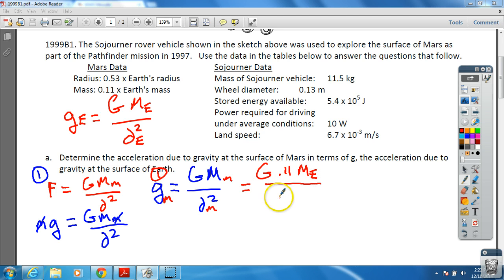We're going to divide that by the radius of Mars, which is actually 0.53 squared times the radius of the Earth squared, because we had to square everything on the bottom.